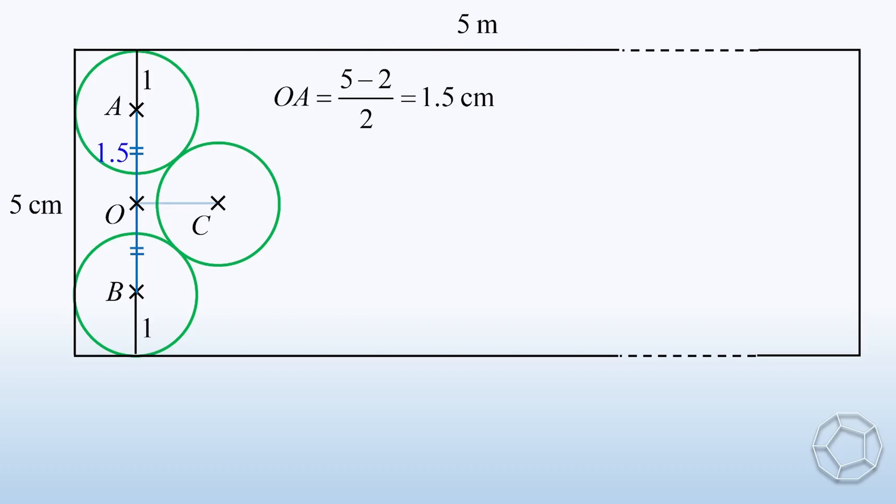Now, let's construct OC and AC as well. By symmetry, OC and OA are perpendicular to each other. So the triangle is right angled. In other words, we can apply Pythagoras theorem.